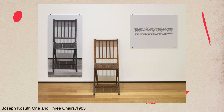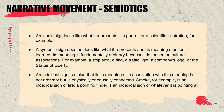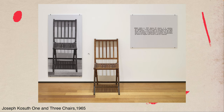In Joseph Kosuth's One and Three Chairs, we have three different versions of a chair, and they're all correct: the actual physical chair, a photograph of the chair, and a written definition of the chair. The definition would essentially function as an indexical sign, while the photograph would be symbolic or iconic, and then the actual object is the thing in and of itself.